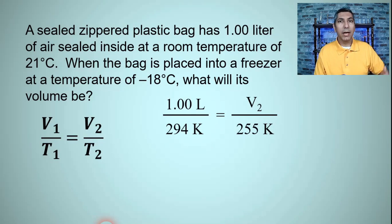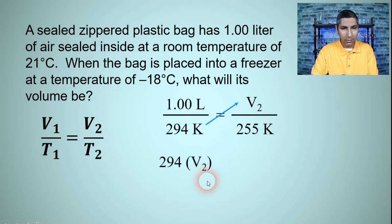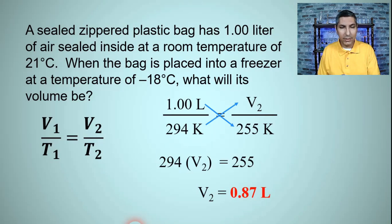Now just like we had in those other equations, probably the best strategy here is to cross multiply and solve for V2. So when I cross multiply in this direction I get 294 times V2, and then when I cross multiply in this direction 255 times 1 is just 255. So to solve for V2 I take both sides and divide by 294. So 255 divided by 294 is about 0.87 liters and so that is our answer for the final volume here.